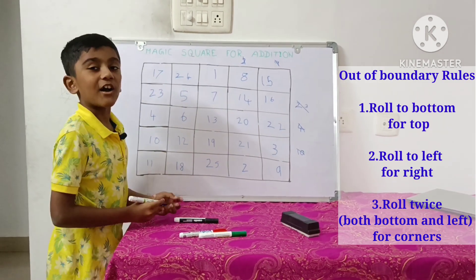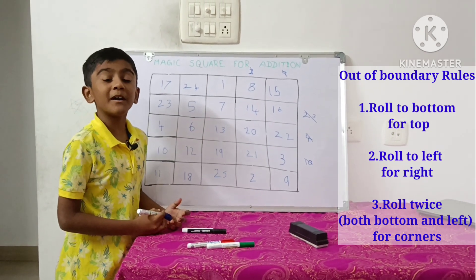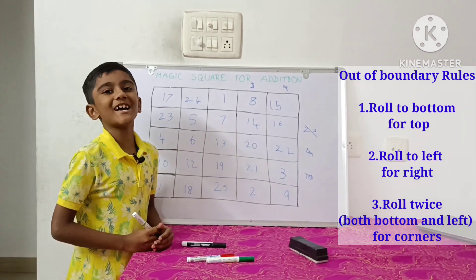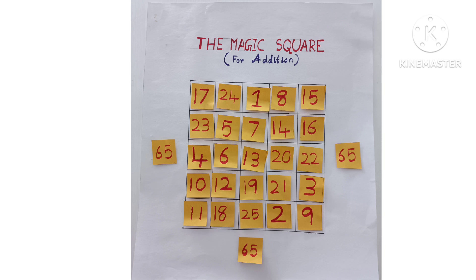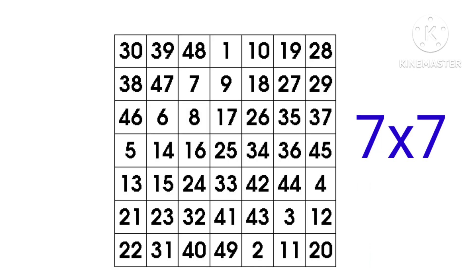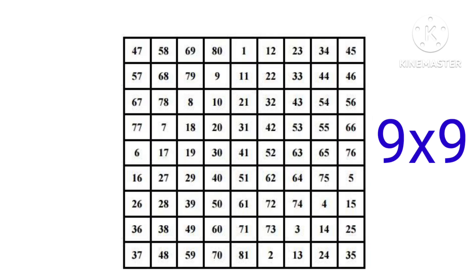That's how you finish a 5 by 5 magic square. In this 5 cross 5 magic square, if we add the numbers horizontally, vertically, or diagonally, we will get the number 65. Similarly, we can solve a 7 by 7 magic square and a 9 by 9 magic square.